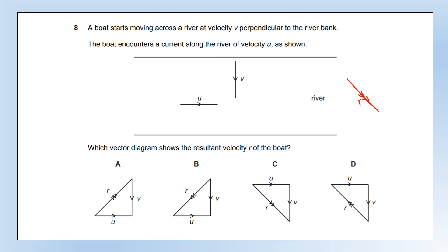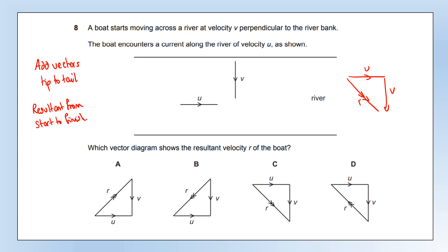A boat starts moving across a river at velocity V perpendicular to the riverbank, and encounters a current of velocity U along the river. Which vector diagram shows the resultant velocity R? When adding vectors, we add them tip to tail and the resultant goes from start to finish. Drawing U first then V at the end of it — the resultant goes from the start of U to the end of V. Options A and B don't have them tip to tail. Option C does, with the resultant correctly from start to finish. Option D has the resultant going from finish to start — the wrong direction. So the answer is C.